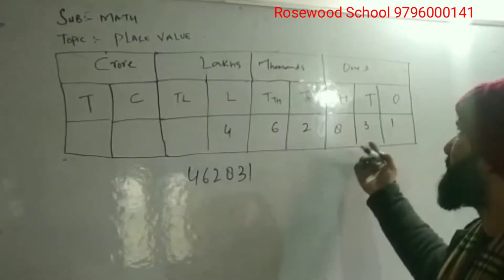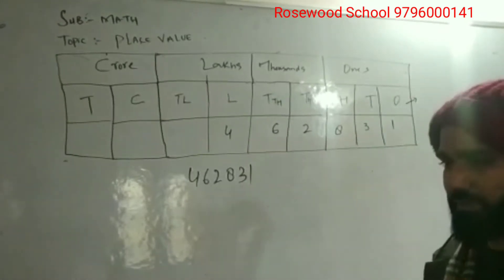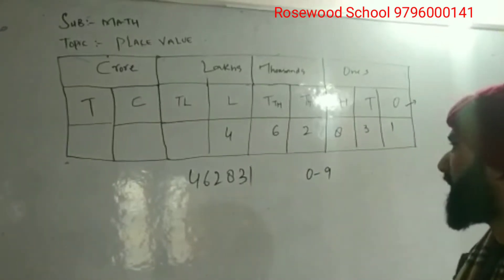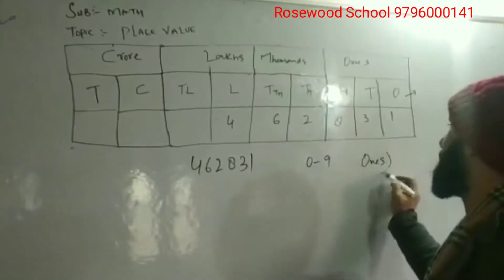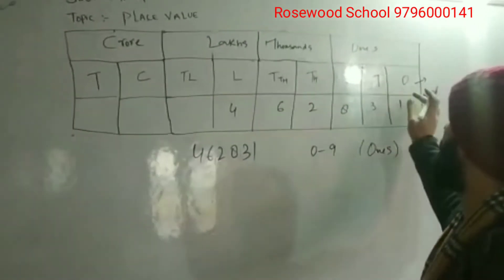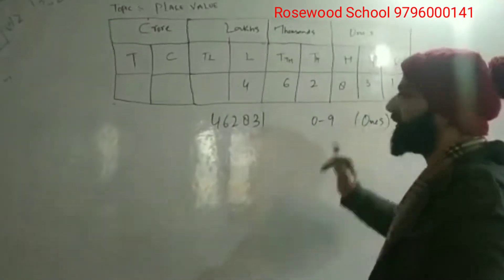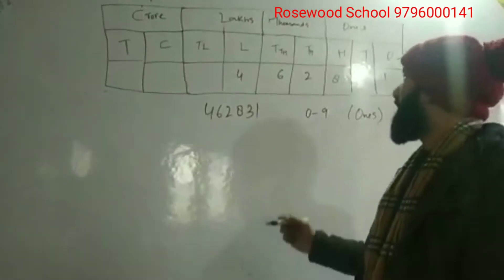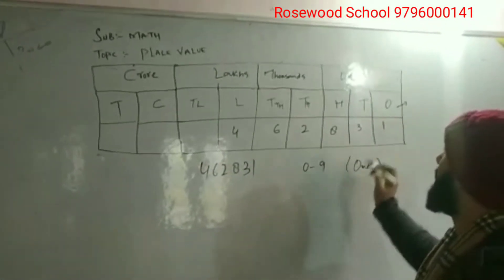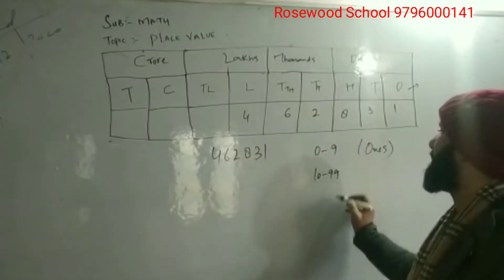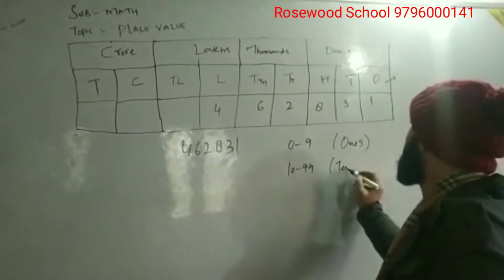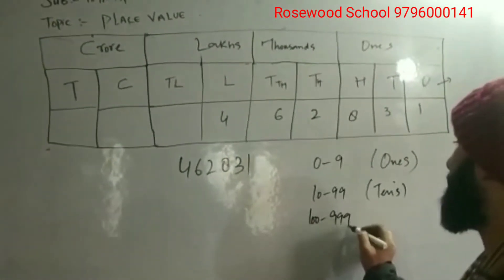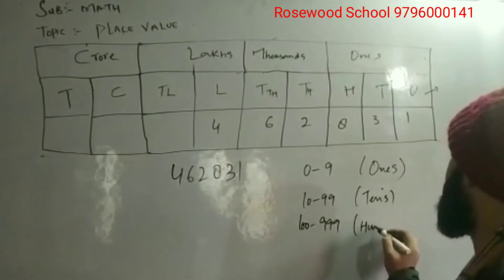Let me describe why we call it the ones place first. From 0 to 9, we say a number is at the ones place. Suppose we have only the number 1 — we write it at the ones place, because the range is 0 to 9. Similarly for tens, the range is from 10 to 99 — we say it is at the tens place. From 100 to 999, we say it is the hundreds place.